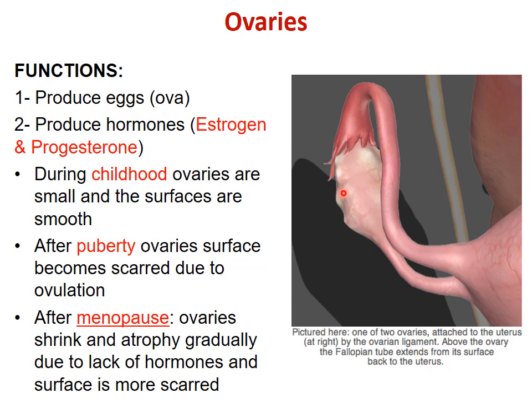After puberty, you can observe the ovary of a fertile woman in medico-legal cases — the surface is scarred. If it is smooth, this means the fertile period has not started; she is younger than 13. At menopause, ovaries shrink and atrophy gradually due to lack of hormones, and the surface is more scarred. After 45, 50, or 55 years when menopause occurs, the ovary will be atrophied, smaller in size, and there will be multiple scars.